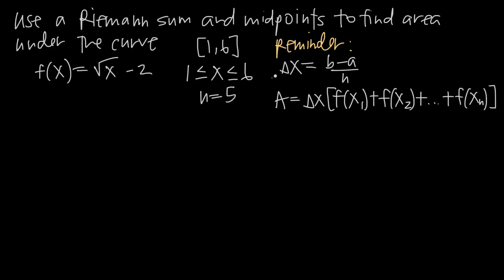In any Riemann sum problem, the first thing you want to do is find Δx. The formula we always use is Δx = (b - a) / n. We already know n = 5, and a and b come from our interval. Since the interval is 1 to 6, a = 1 and b = 6. Plugging those in: (6 - 1) / 5 = 5/5 = 1. So Δx = 1.